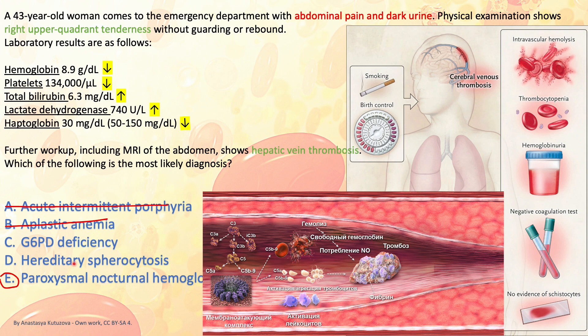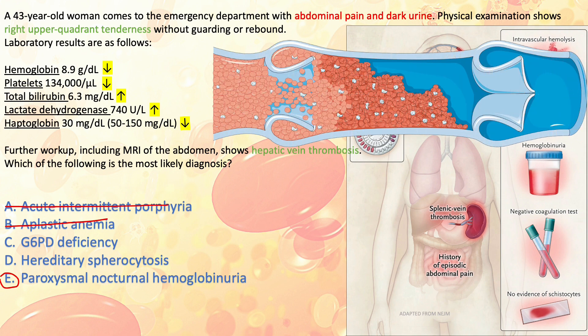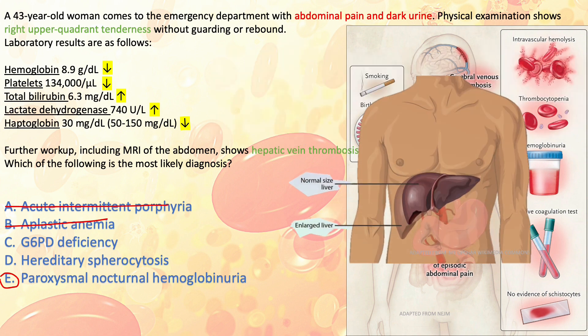Hereditary spherocytosis is excluded because it is chronic — this patient is presenting acutely. Also, spherocytosis is mostly due to extravascular hemolysis, so haptoglobin won't be low. Additionally, the examiner would hint toward spherocytosis with family history of anemia, cholecystectomy, or splenectomy and an enlarged spleen. The only correct answer here is PNH — paroxysmal nocturnal hemoglobinuria — with hepatic vein thrombosis causing right upper quadrant tenderness and hepatomegaly.